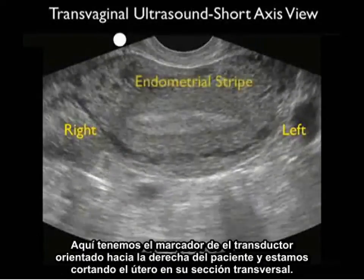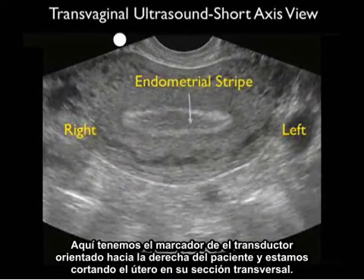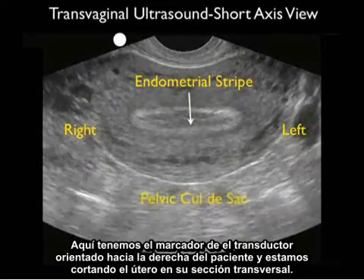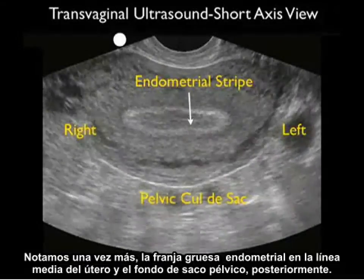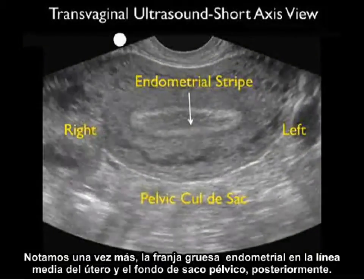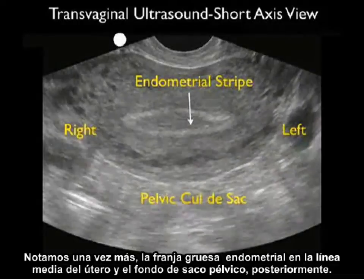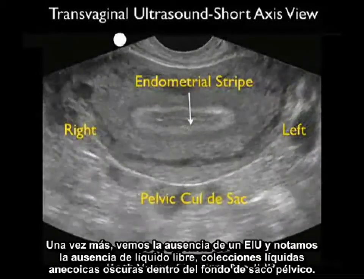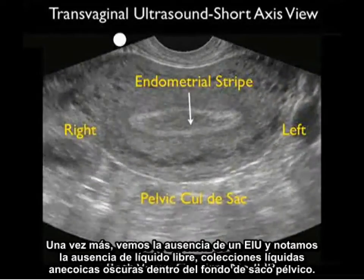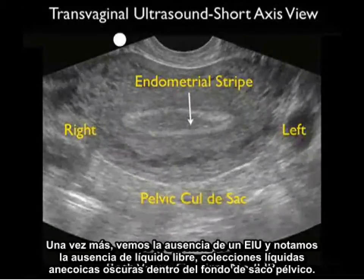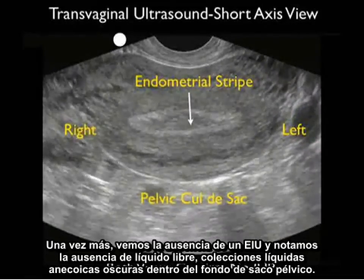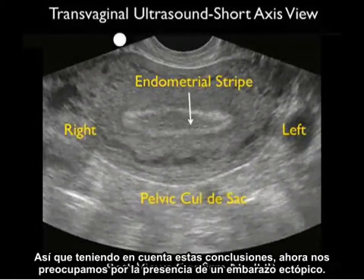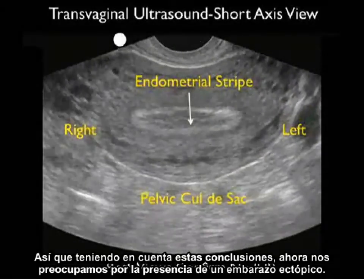Here we have the probe marker oriented towards the patient's right and we're cutting the uterus in cross section. Notice again the thickened endometrial stripe in the midline of the uterus and the pelvic cul-de-sac posteriorly. Again we see the absence of an IUP, and also note the absence of free fluid — dark anechoic fluid collections within the pelvic cul-de-sac. Given these findings, we're now concerned about the presence of an ectopic pregnancy.